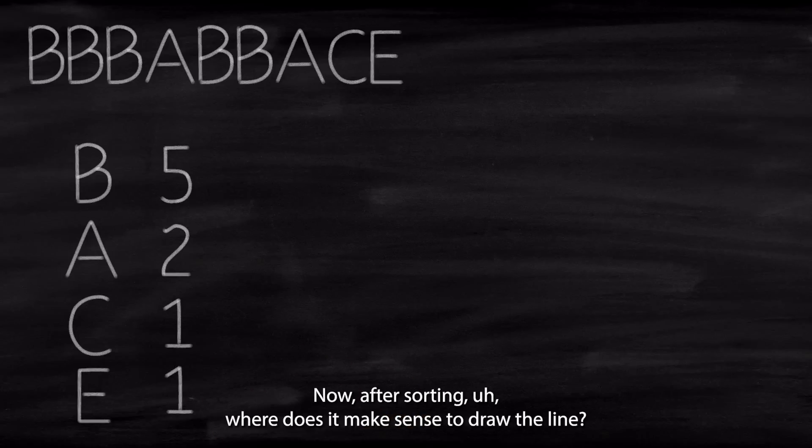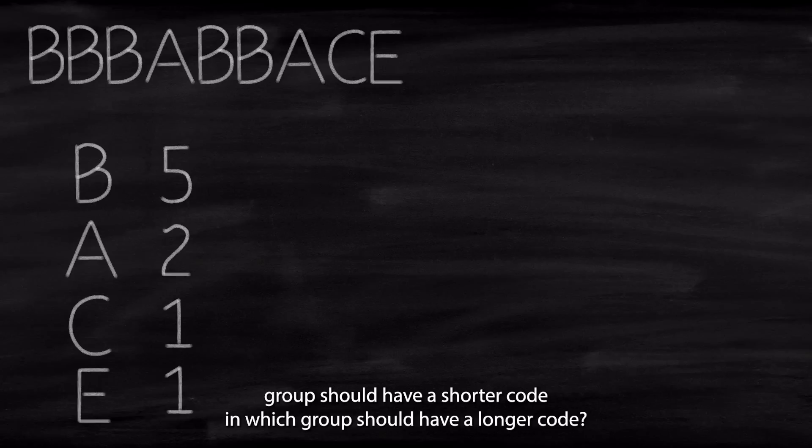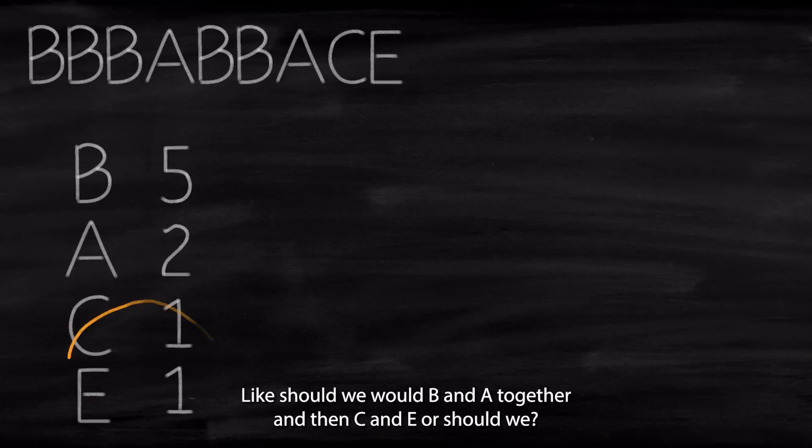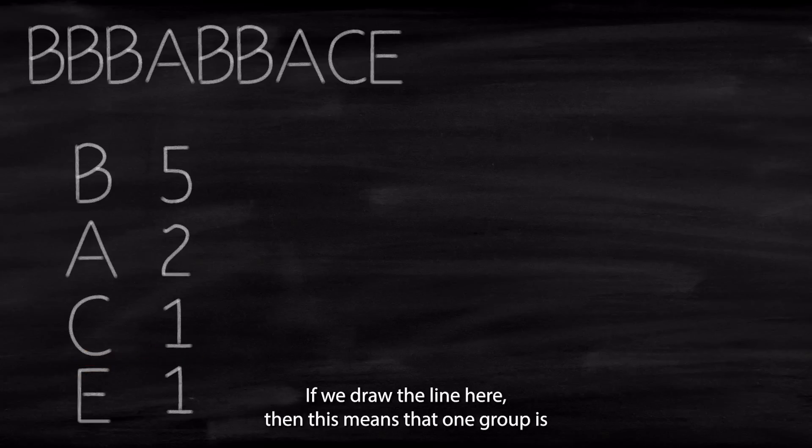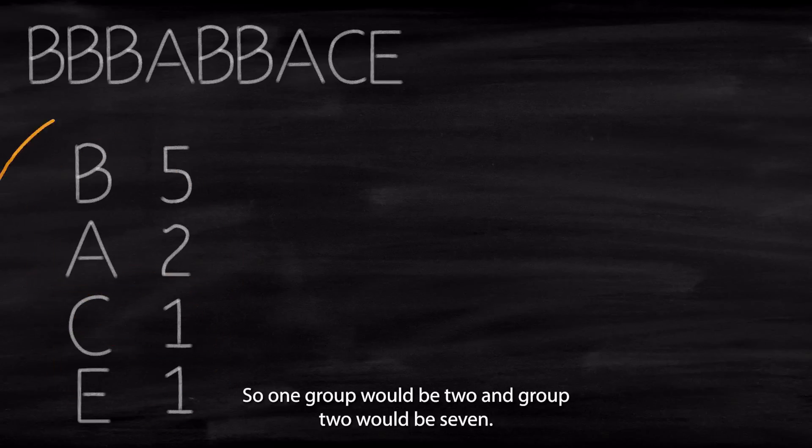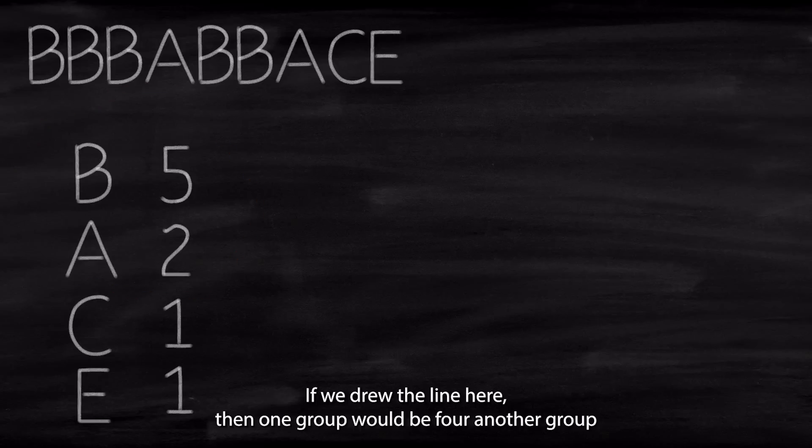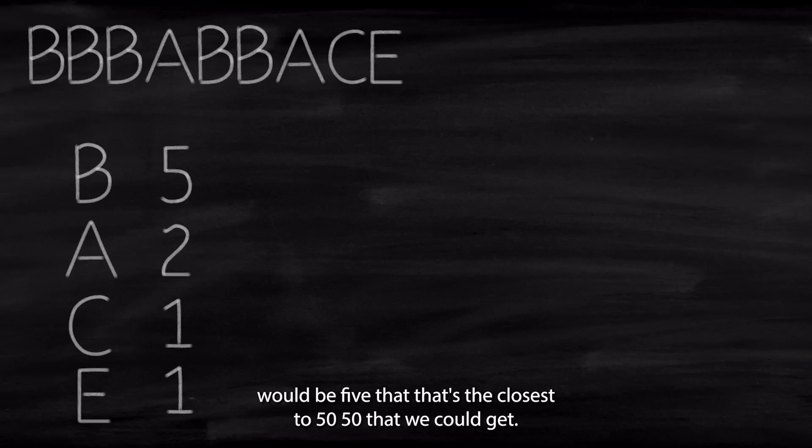Like, which group should have a shorter code and which group should have a longer code? Like, should we put B and A together and then C and E? Or should we put B alone and A, C, E alone? Or maybe one group is E and one group is B, C, A. Which division makes more sense? Which division is more balanced? If we draw the line here, then this means that one group has got a weight of 1 and the other group has got a weight of 8. That doesn't seem fair. If we draw the line here, so one group would be 2, one group would be 7. Doesn't seem fair as well. If we draw the line here, then one group would be 4, another group would be 5. That's the closest to 50-50 that we could get.